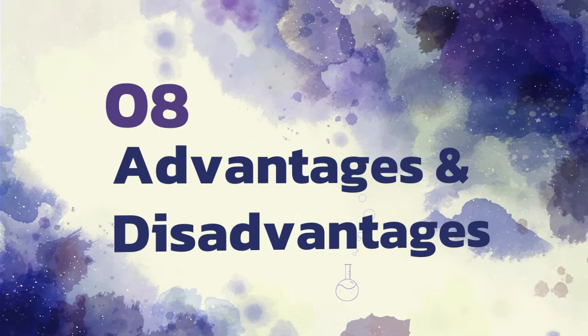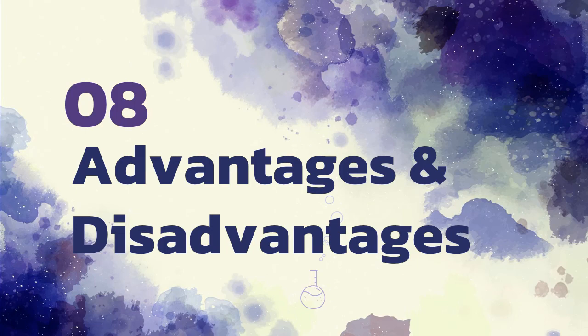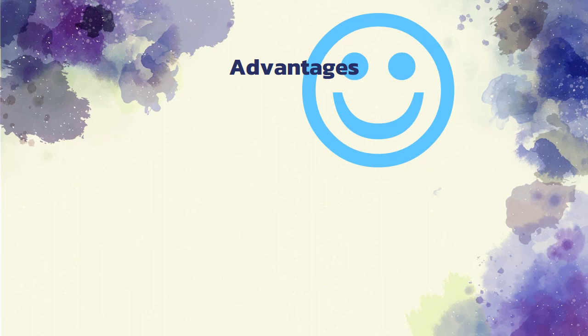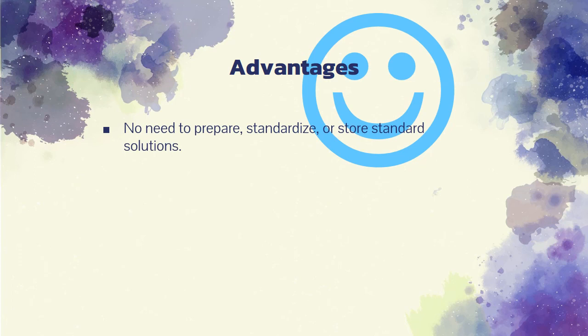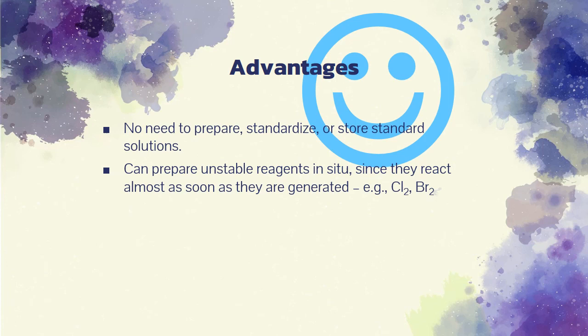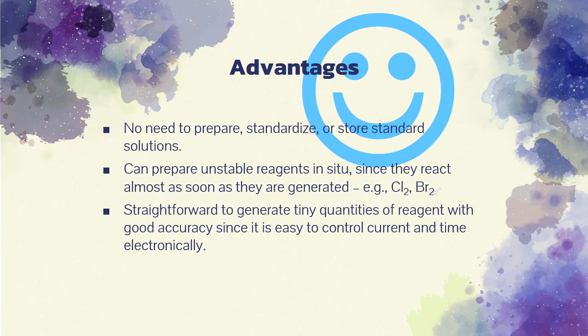We have come to the last part to discuss the advantages and disadvantages of coulometry. Coulometric titration is often compared to volumetric titration. Here are several significant advantages of the coulometric method. Coulometric titrations eliminate the problems associated with the preparation, standardization, and storage of standard solutions. This advantage is particularly significant with reagents such as chlorine, bromine, and titanium 3+ ion, which are sufficiently unstable in aqueous solution to seriously limit their value as volumetric reagents. Their use in a coulometric determination is, however, straightforward, because they are consumed as soon as they are generated.